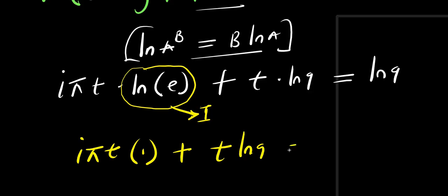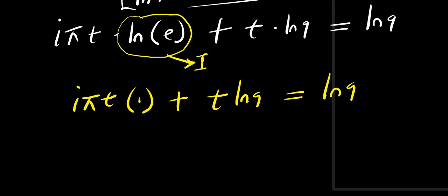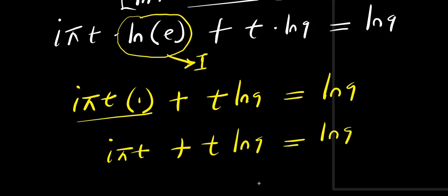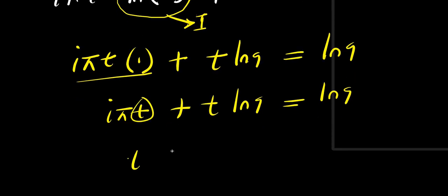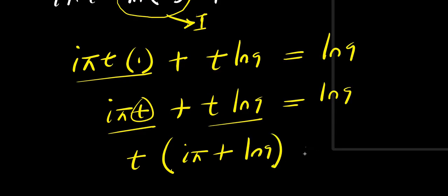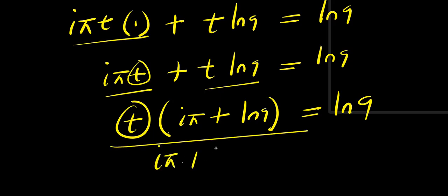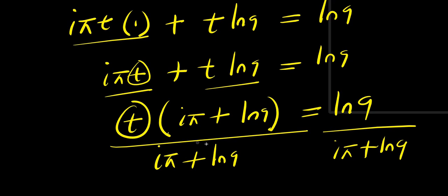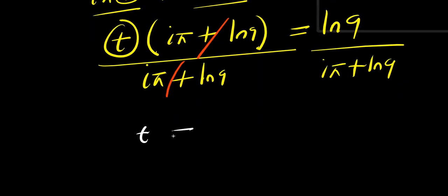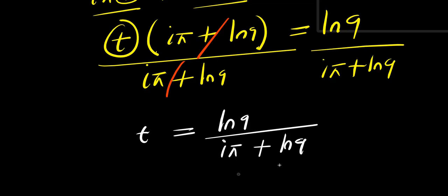So we have i times pi times t plus t times ln 9 equals ln 9. I can factor out t: t times the quantity i times pi plus ln 9, equals ln 9. Dividing both sides by i times pi plus ln 9 isolates t, and we get t equals ln 9 divided by i times pi plus ln 9. This is our solution using the second method.